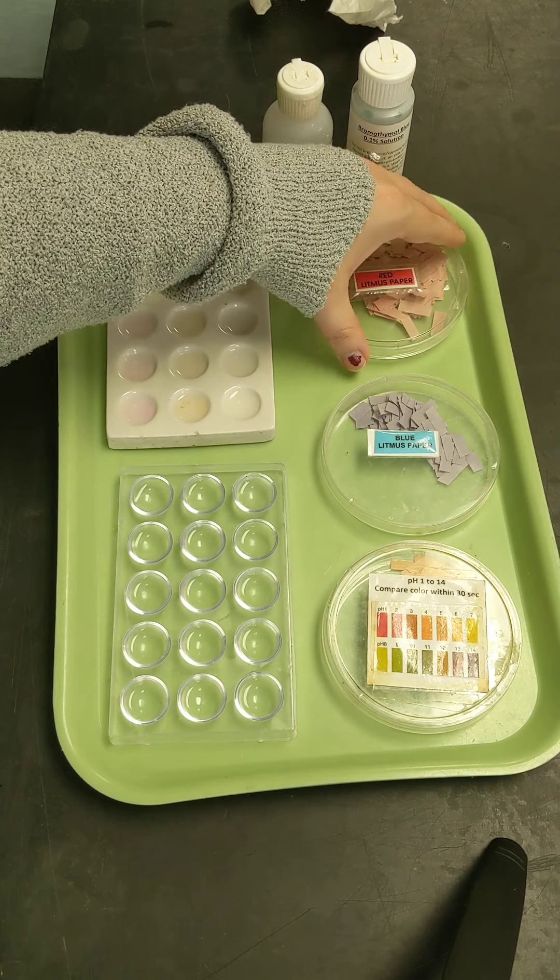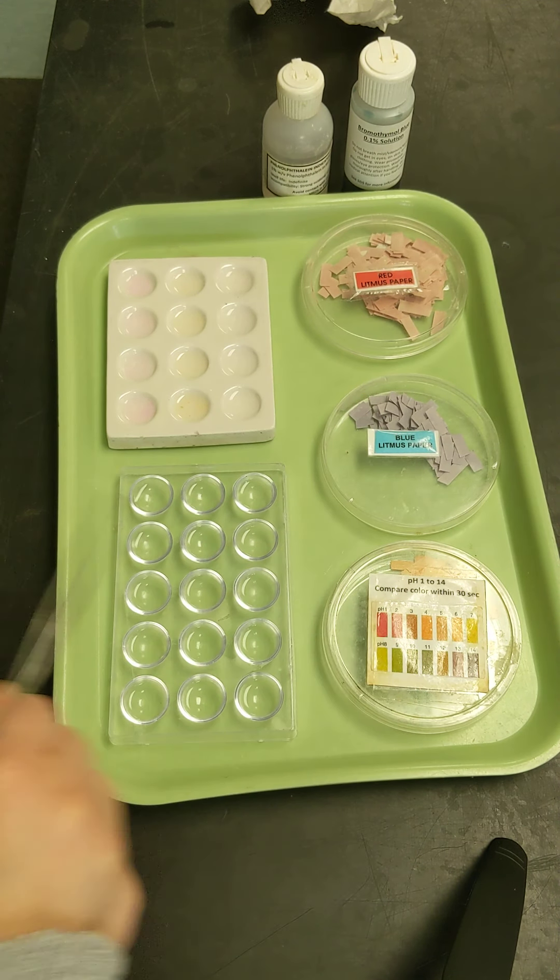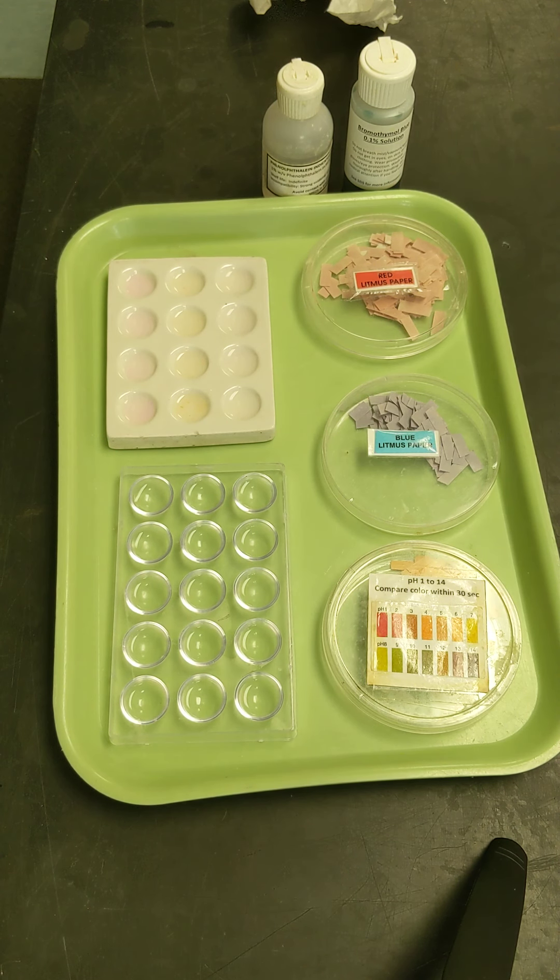So what I have set up on my tray is a couple key pieces of information. I got some red litmus paper, blue litmus paper, a pH paper, and then two types of indicators.